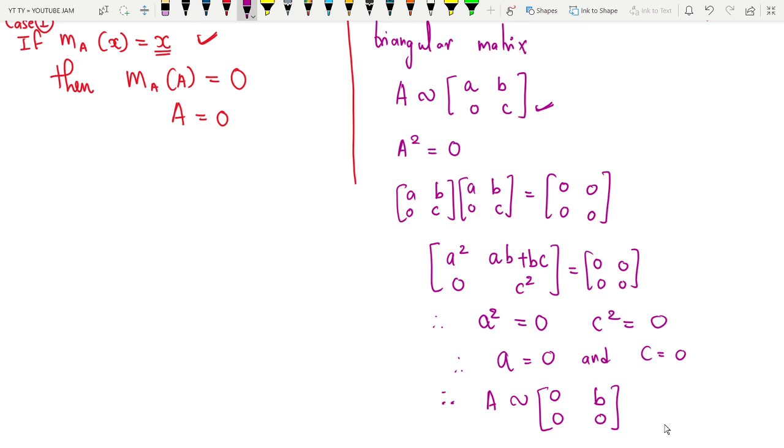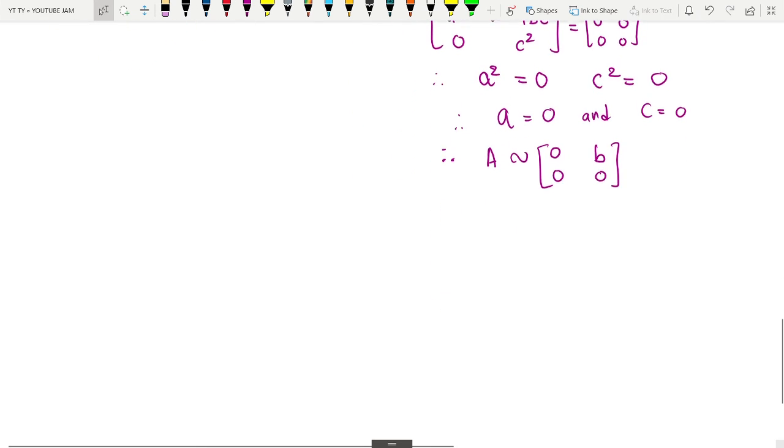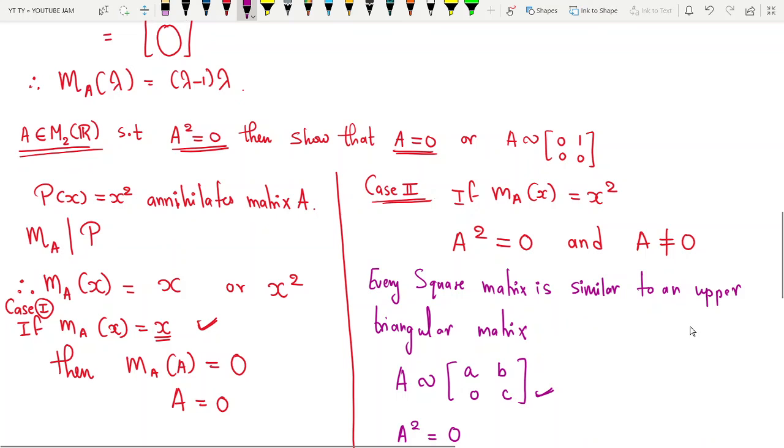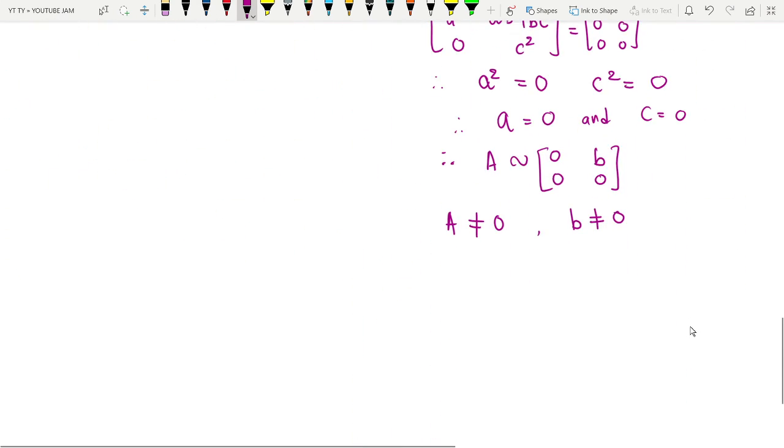Now, since matrix A is not equal to 0 in this case, B cannot be 0. We wanted to prove my matrix A is similar to [0 1; 0 0]. What we found is it is similar to [0 b; 0 0]. So what we need to prove now is that [0 b; 0 0] is similar to [0 1; 0 0].